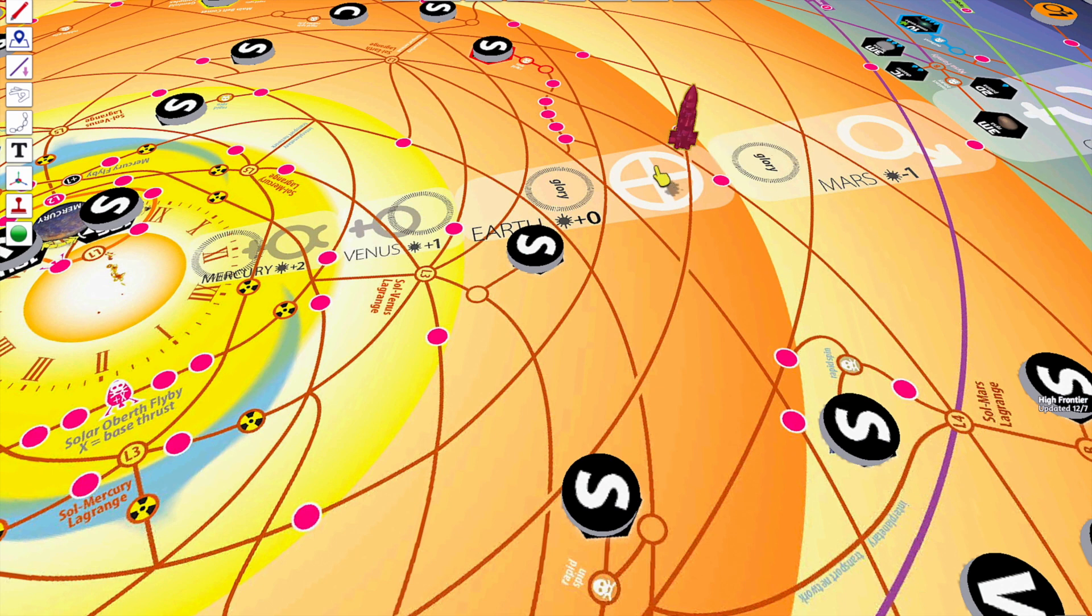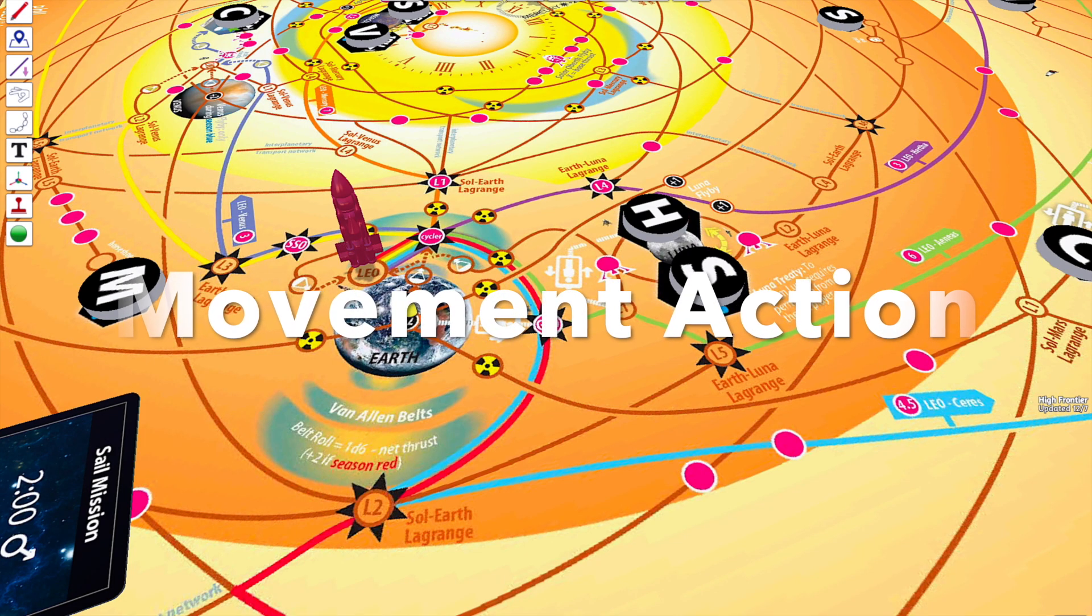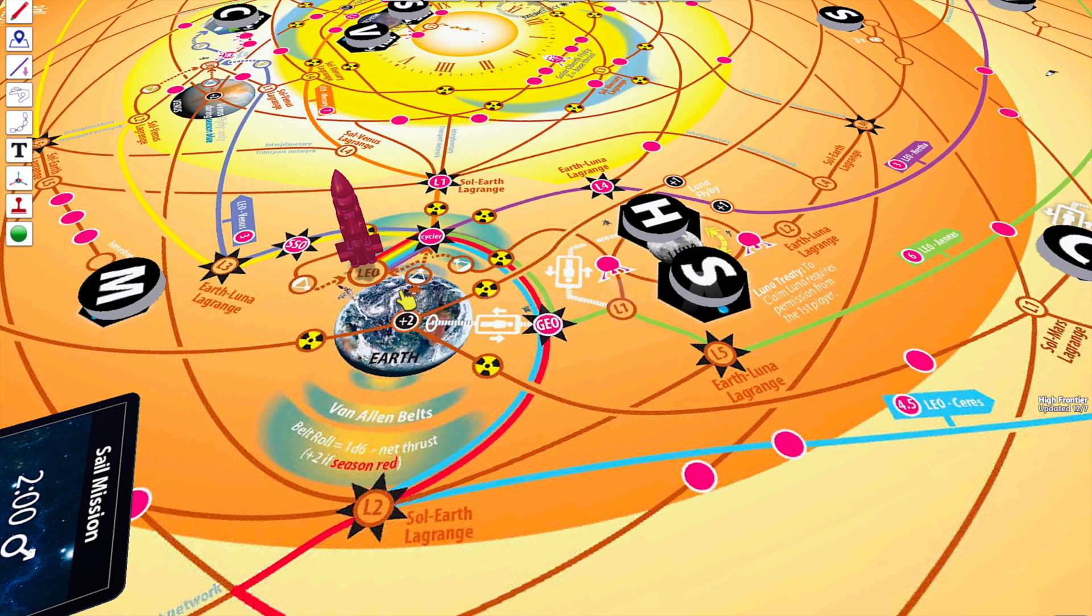On our turn, we're starting in the Earth Zone, so we have a net thrust of 2. Net thrust is the maximum number of burns you can execute. Sails don't burn any fuel within that limit.